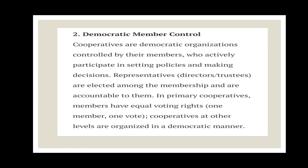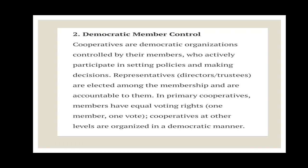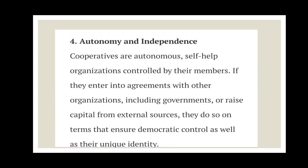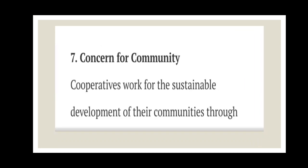To summarize the six points so far: first is open and voluntary membership; second is democratic member control; third is members' economic participation; fourth is autonomy and independence; fifth is education, training, and information. Now we study the last principle, which is concerned with the community. Cooperatives are established for the welfare of the community — they are not profit-seeking institutes; they are established for the concern of the community.